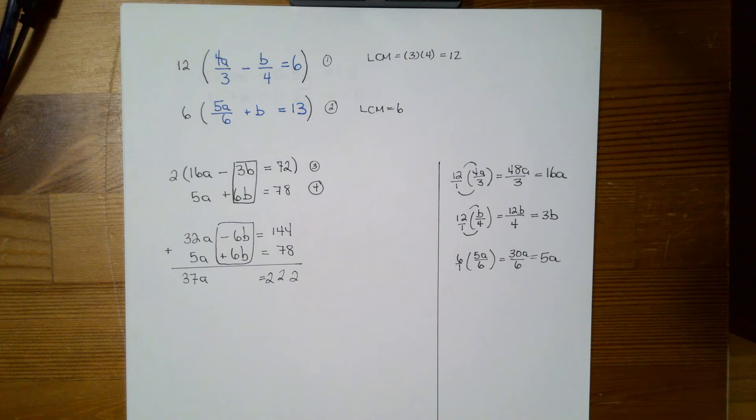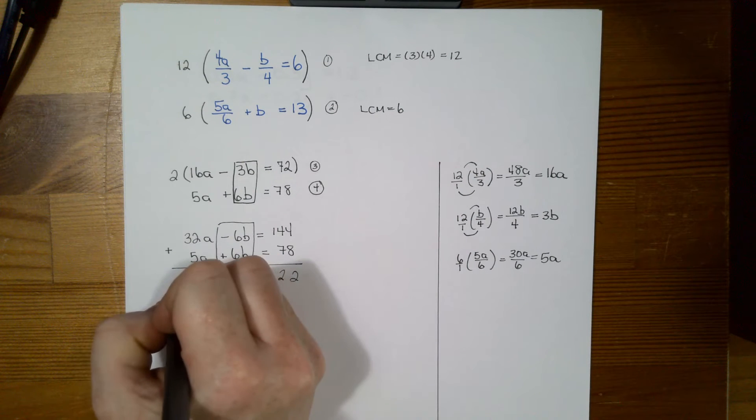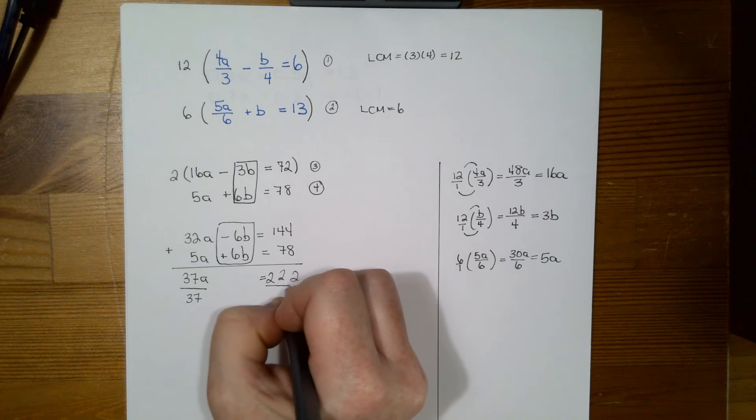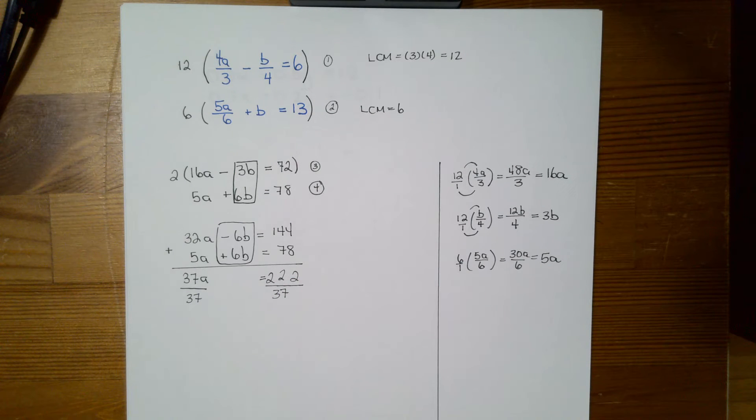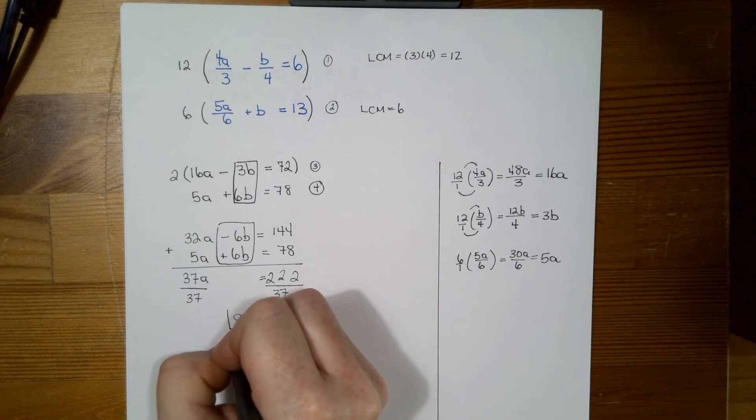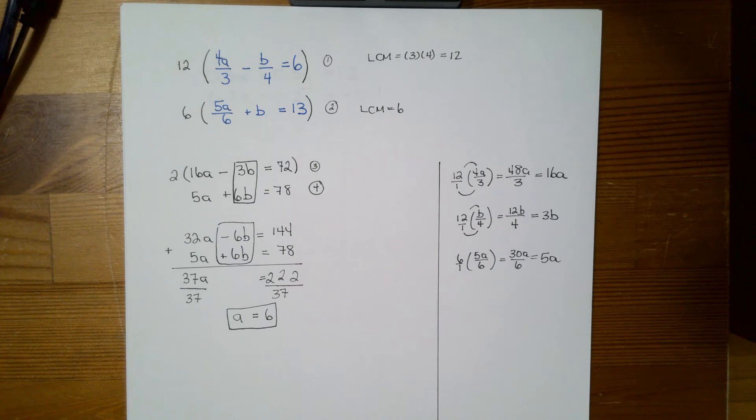So now I can divide both sides by 37. So I'm going to divide this side by 37. And I'm going to divide this side by 37. And when I do that, I end up with a is equal to 6. So now I know what a is. So I'm halfway to finish my question, because now I just need to figure out what b is.